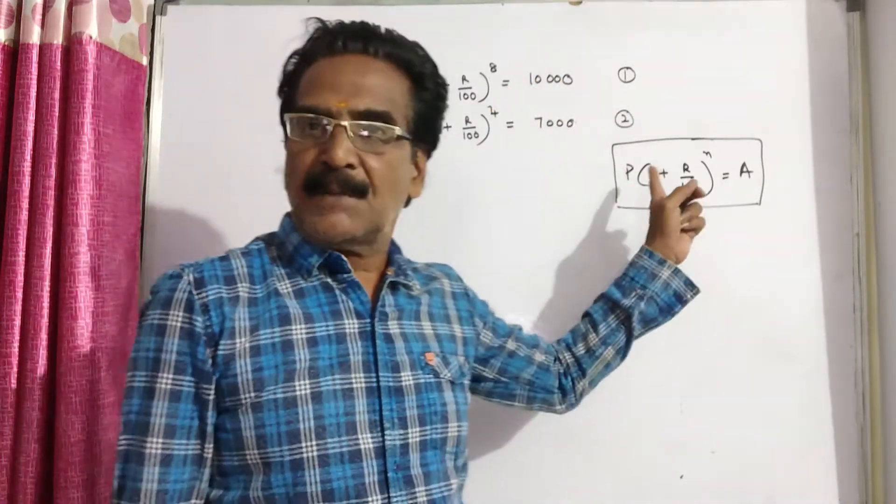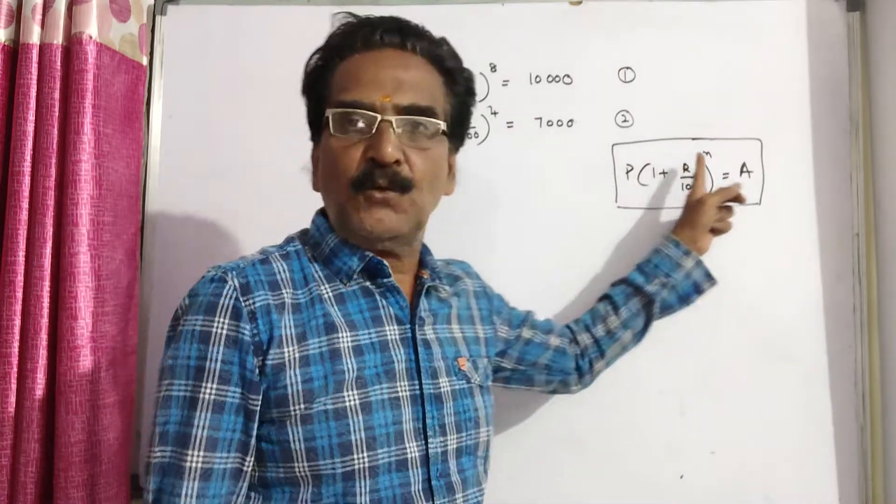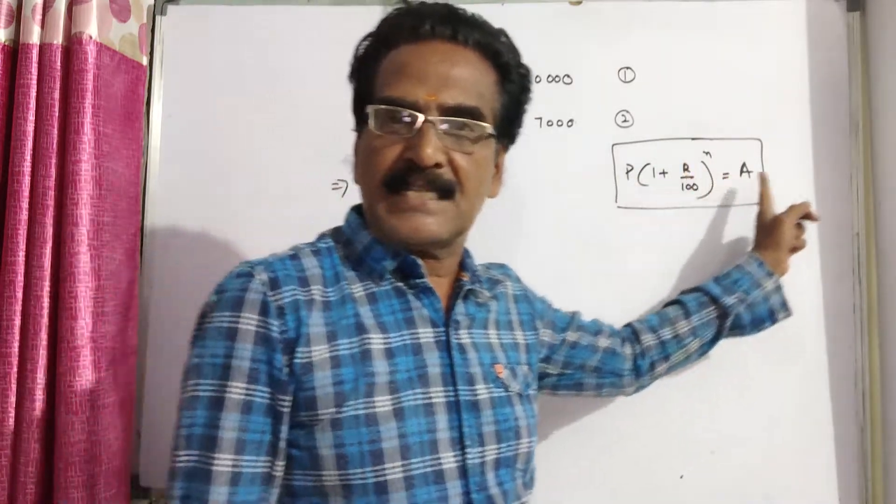For compound interest, we know the formula: P into 1 plus r by 100 whole power n is equal to amount.